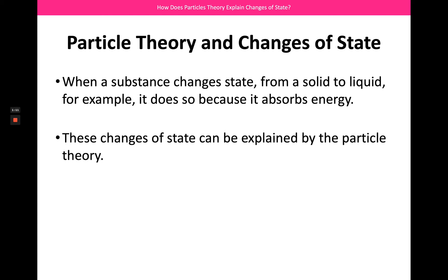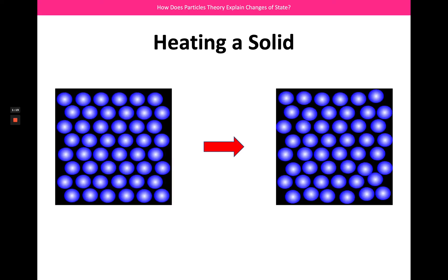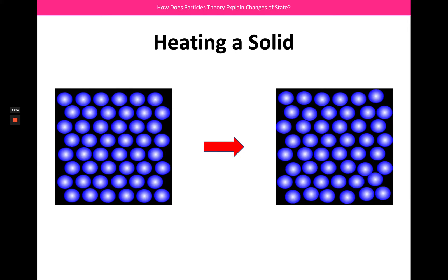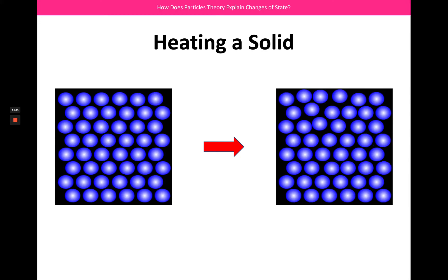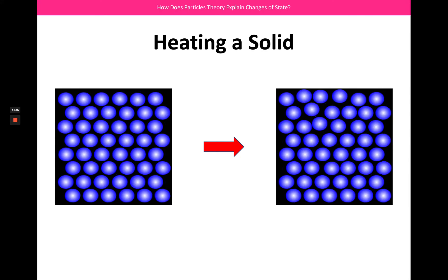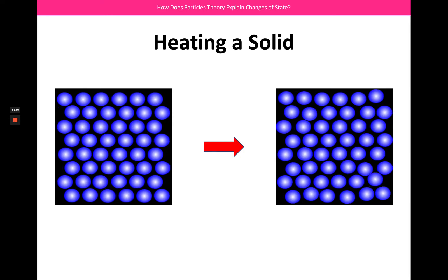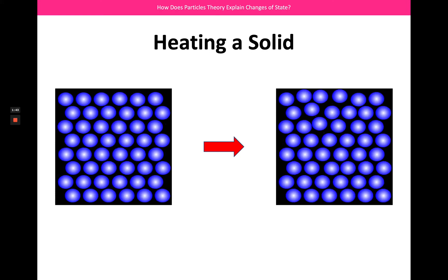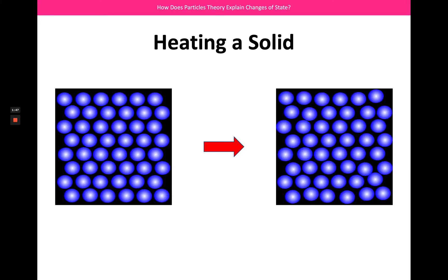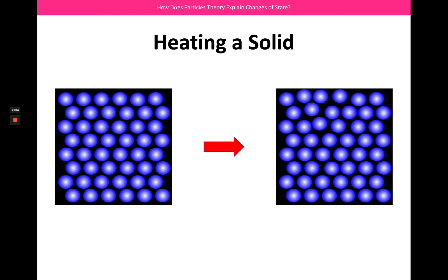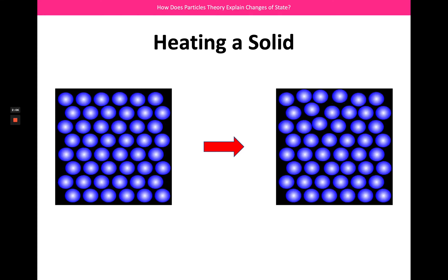We can think about what we've done on the particle model to explain those changes of state. Both of these images are showing a solid substance, but what you can see on the right-hand side is that the particles are vibrating about their fixed positions much, much more. So how have we changed the left to the right? We've done that by basically giving the particles more energy — by increasing the temperature of the substance. It doesn't take much more energy for those particles on the right-hand side to overcome the forces of attraction, the stickiness between them, so that we actually change state.